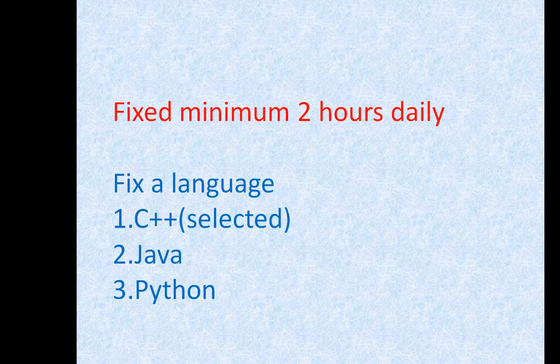At that time I was getting project calls and was mapped to a project, so I was working and side by side I had to prepare. In work you are not doing coding every time — you have to do a lot of things. So I decided I will at least give two hours daily for coding, because I need to practice. At least two hours daily — this is a must.